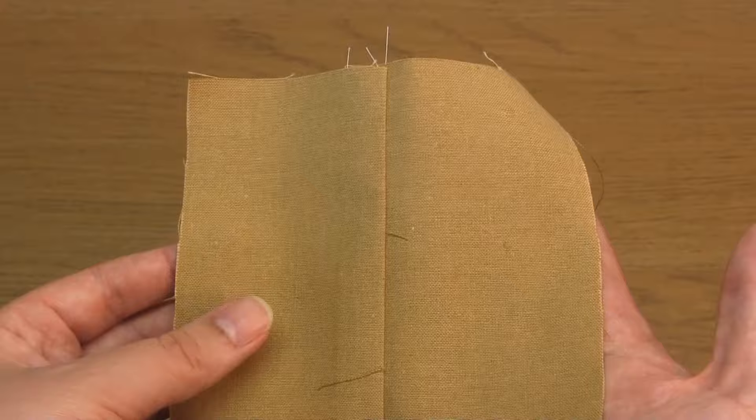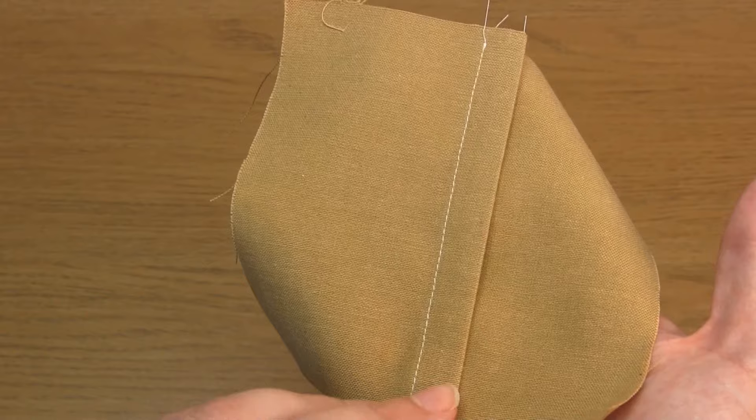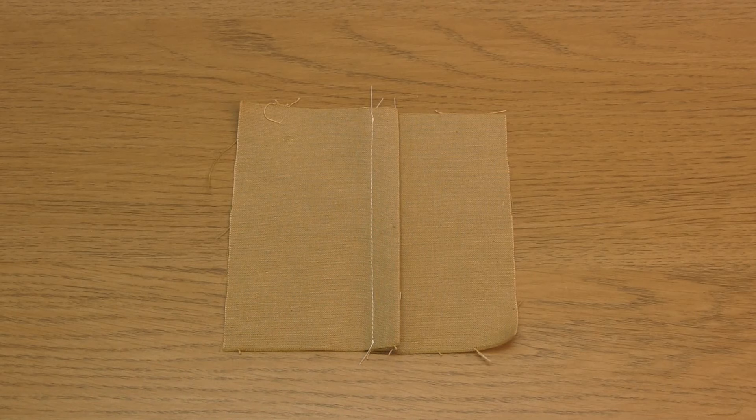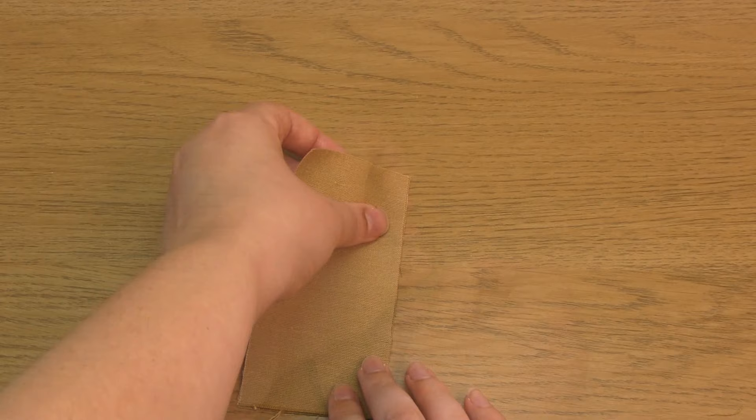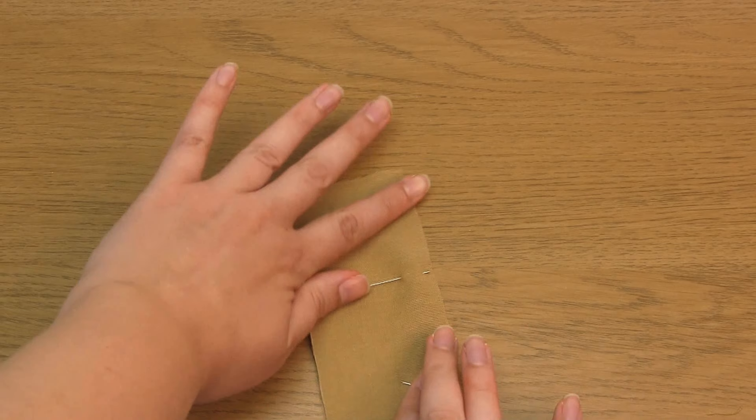Now I'm just going to make this same seam but without the trimming step. And at the end of the video I'm going to go through the reasons why you might want to include the trimming step or miss it out. So again you put the wrong sides of the fabric pieces together and pin them in place. Then sew with a straight stitch a quarter of an inch from the edge. Remember you can use the markings on your sewing machine for guidance.